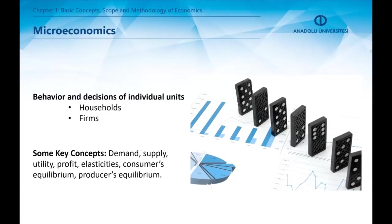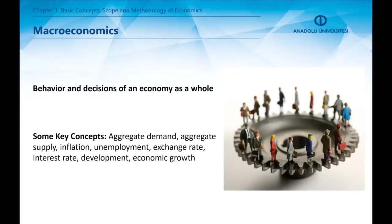Microeconomics is the economics of individuals. Microeconomics is interested in individuals' behavior in the economy — these individuals consist of households and firms. On the other hand, macroeconomics is the economics of the whole economy. Macroeconomics is interested in the behaviors and decisions of whole economies, of countries or regions, and even the world.